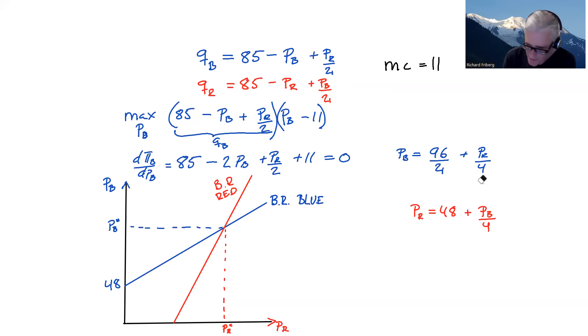So to solve that, we have two equations, two best response functions and two unknowns. Price of blue and the price of the red. So we can solve by inserting what we know about the red price into blue's best response function. So let's do that or vice versa. We could do it that way around, of course.